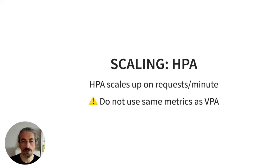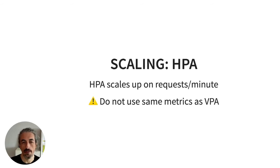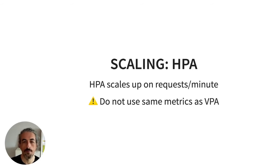We also use the Horizontal Pod Autoscaler, configured to scale up based on requests per minute. One thing to be aware of: you cannot use the same metrics for both HPA and VPA — this is documented in the Kubernetes documentation.